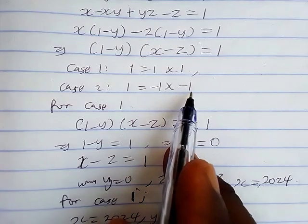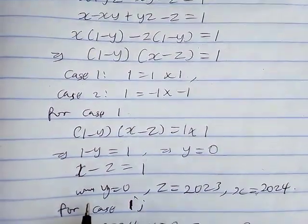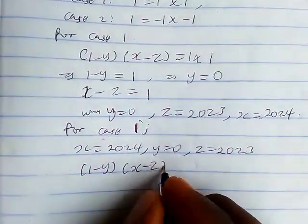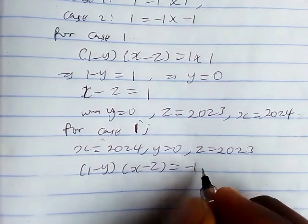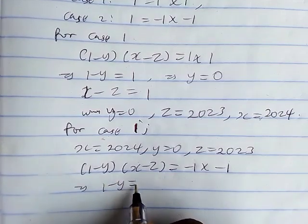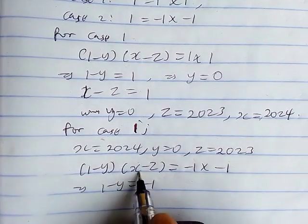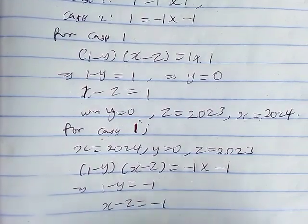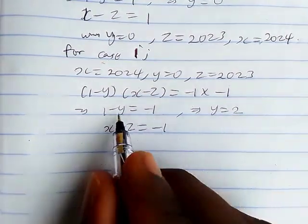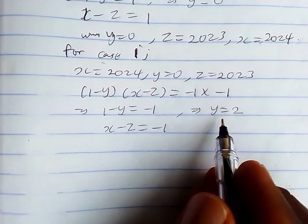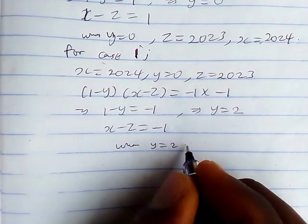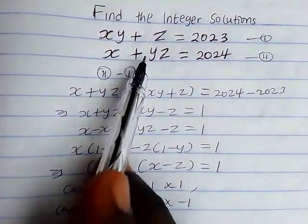Now let's consider Case 2, where 1 equals negative 1 times negative 1. So we have (1 minus y) times (x minus z) equals negative 1 times negative 1. This gives 1 minus y equals negative 1, so y equals 2, and x minus z equals negative 1. We now substitute y equals 2 into equations 1 and 2.